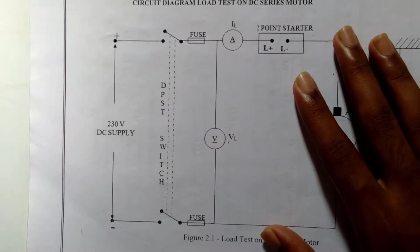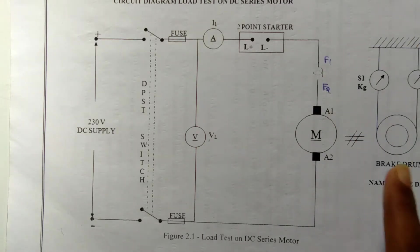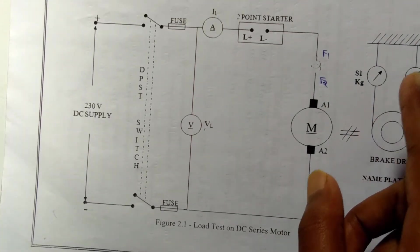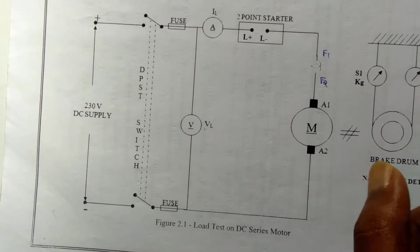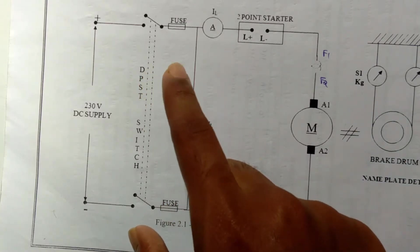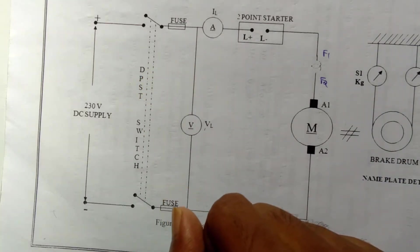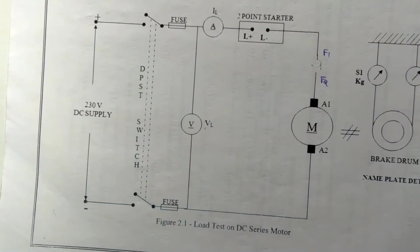Before going to the procedure, the precautions: Before the motor is started, the brake drum is to be loaded to avoid high speed which will damage the winding. The fuse is selected such that its rating is 120 percent of the rated current.